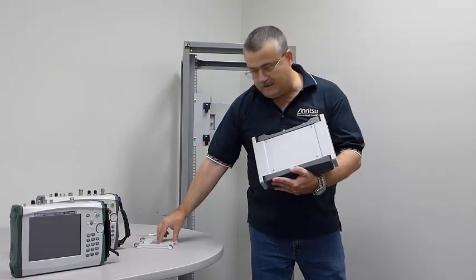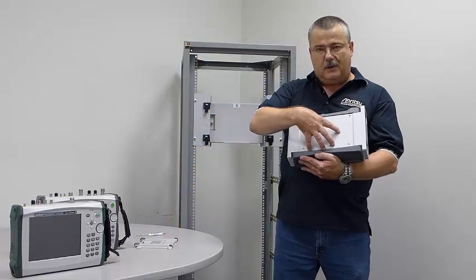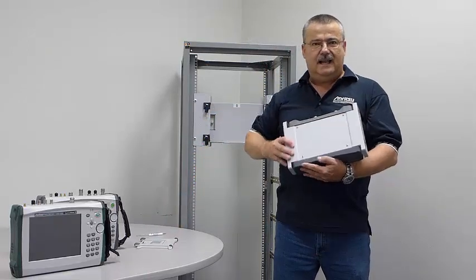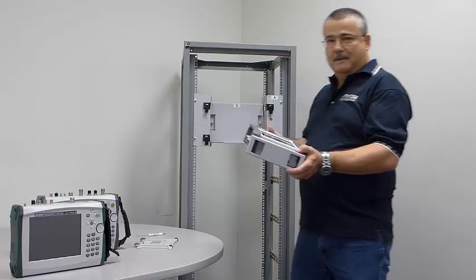You simply remove those screws, take the handle, install the bracket, use the same screws, and now you're ready to install the economy instrument into the rack mount kit.